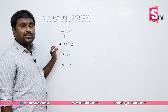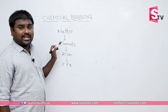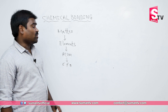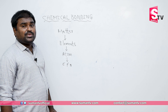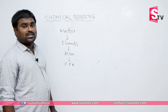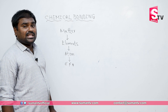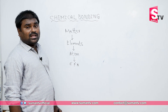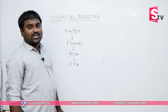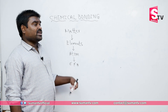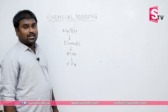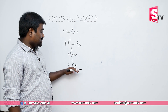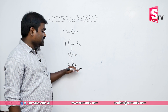The element is a pure substance which we cannot separate by using any physical or chemical methods. An atom is the smallest, tiniest particle which cannot be further divided into a new substance. Inside every atom there are electrons, protons, and neutrons.